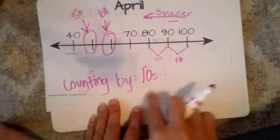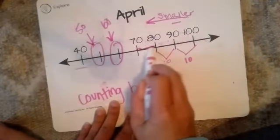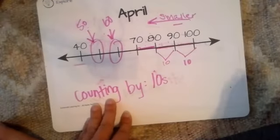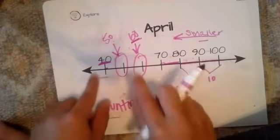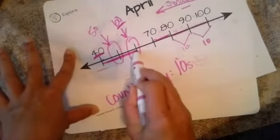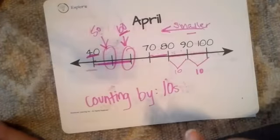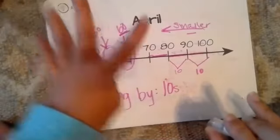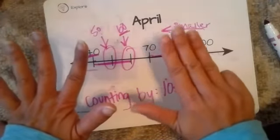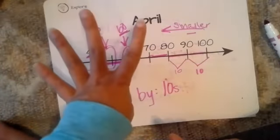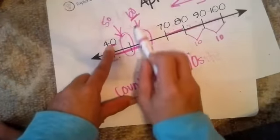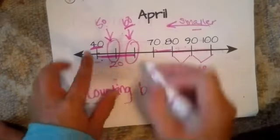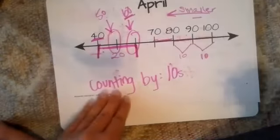What if I wanted to find the distance between this 40 and the 60? How would I figure out this big distance? I know my points, so I would just count up: 40, 41, 42, 43, 44, 45, 46, 47, 48, 49, 50, 51, 52, 53, 54, 55, 56, 57, 58, 59, 60. So the distance between 40 and 60 is 20. I just wanted to figure out how far apart two things were.